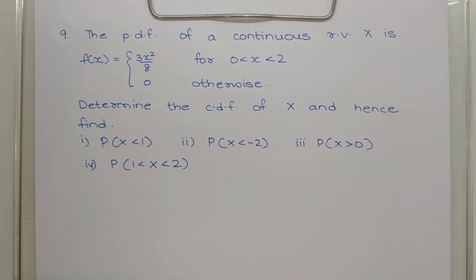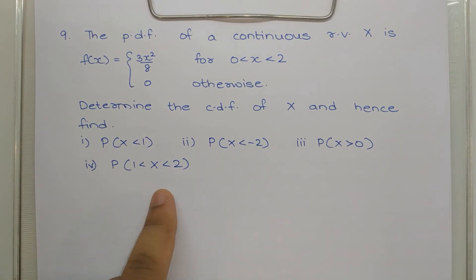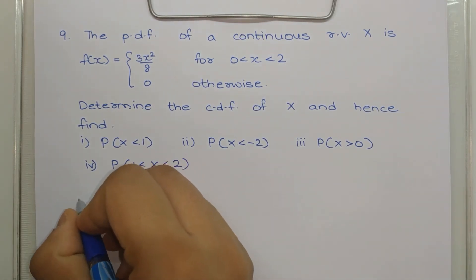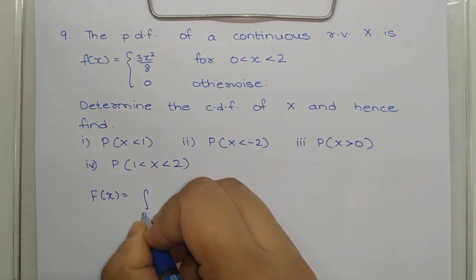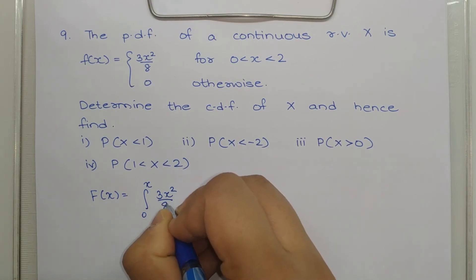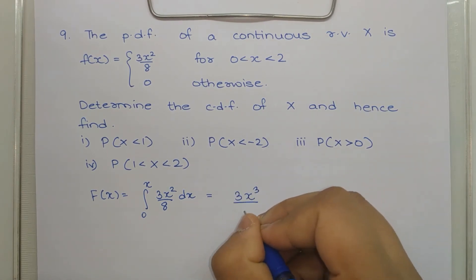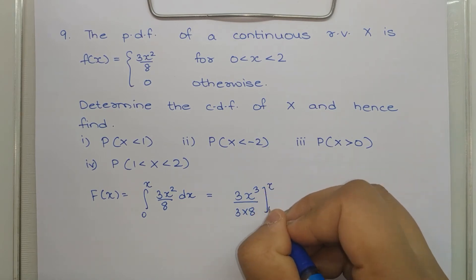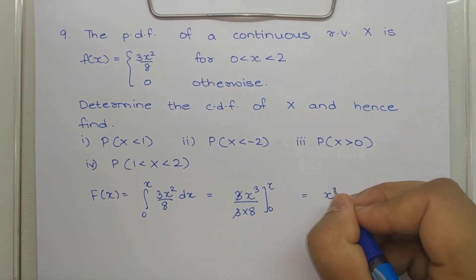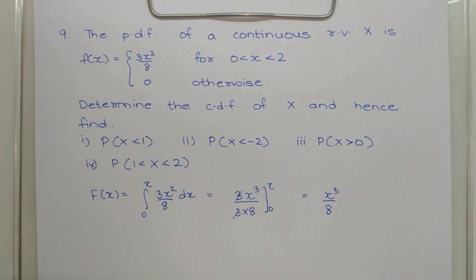In question 9, f(x) = 3x²/8 for x between 0 and 2, and 0 otherwise. The CDF is F(x) = integral from 0 to x of 3x²/8 dx = (3/8)·x³/3 from 0 to x. The 3s cancel giving F(x) = x³/8.